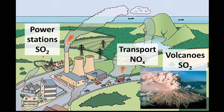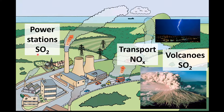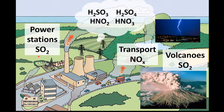Acid deposition is caused by acidic gases such as sulfur dioxide and the oxides of nitrogen. Manmade sources of sulfur dioxide include power stations that burn coal that contains sulfur, and natural sources include volcanoes. Manmade sources of nitrogen oxides include transport such as the internal combustion engine in a car. Natural sources of nitrogen oxides include lightning and bacteria.